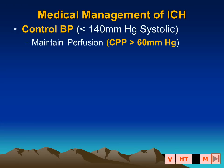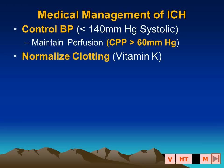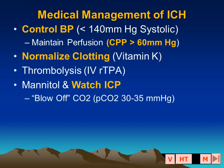The medical management of intracerebral hemorrhage includes controlling the blood pressure while maintaining a cerebral perfusion pressure greater than 60 mmHg. If the patient has a coagulopathy, we might want to normalize the clotting factors. The patient may be on oral anticoagulants like Coumadin, in which case we can administer vitamin K. Intravenous thrombolysis has been used, and mannitol is very commonly given acutely.